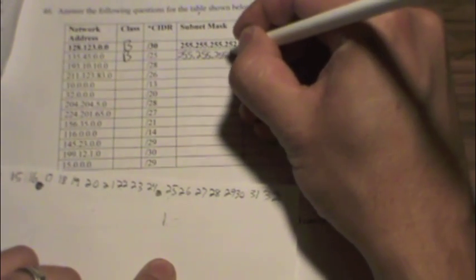And then the rest are 0s. So if we translate that binary into decimal, 128. So our subnet mask is 255.255.255.128.